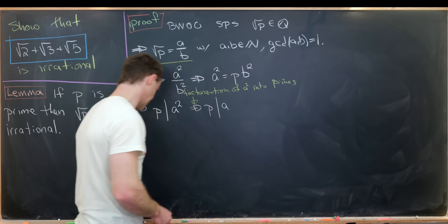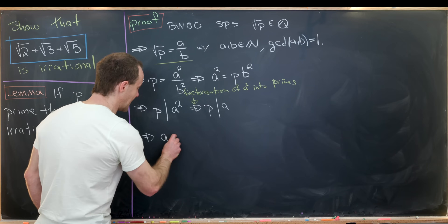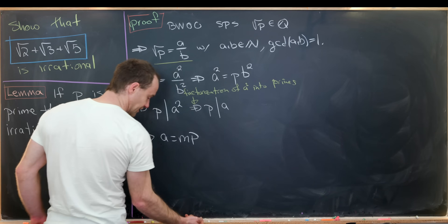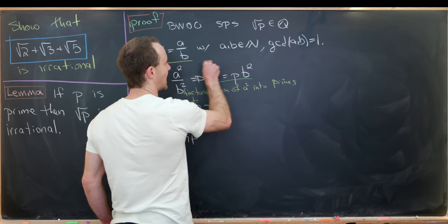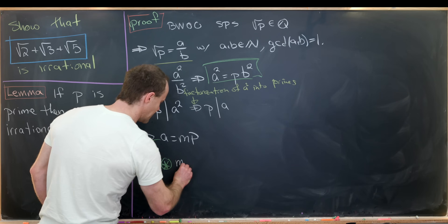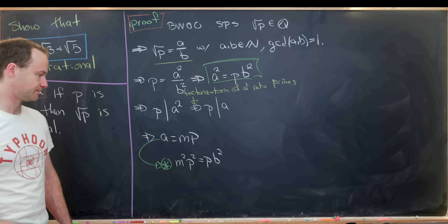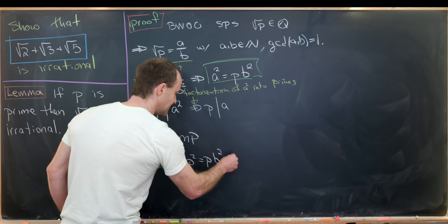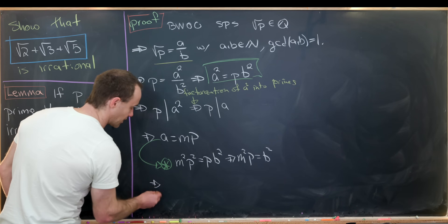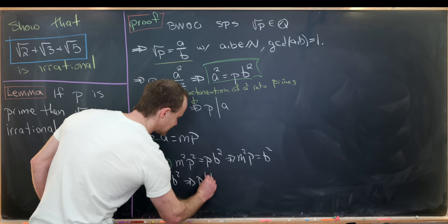In other words, the fundamental theorem of arithmetic. Now, if p divides a, that means we can write a as m times p. Plugging that back into our equation gives us m squared times p squared equals p times b squared. We can cancel a factor of p from both sides, giving us m squared times p equals b squared. In other words, p divides b squared, and by the same argument, p divides b.